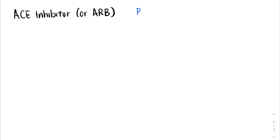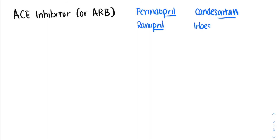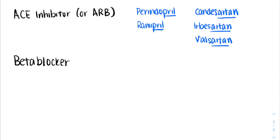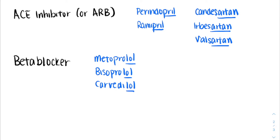This overview doesn't include the nuances of advanced therapy options. Barring any contraindications, all heart failure with reduced ejection fraction patients should be on an ACE inhibitor or an ARB. Examples of an ACE inhibitor may include perindopril or ramipril. Examples of an ARB may include candesartan, irbesartan, or valsartan. As well, these patients should also be on a beta blocker, and we commonly use metoprolol, bisoprolol, or carvedilol for the purpose of heart failure.